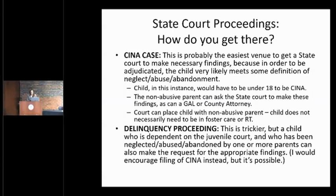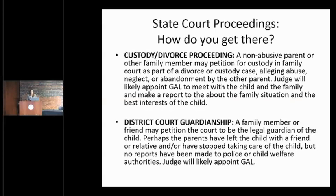You can also pursue this through a custody or divorce proceeding. A non-abusive parent or family member could petition for custody in family court as part of a divorce or custody case and allege abuse, neglect, or abandonment by the other parent. It would be wise to get the court to appoint an independent guardian ad litem. Similarly, with district court guardianship, a family member or friend could petition the court to be the legal guardian of a child — perhaps the parents are undocumented, have been deported, or left the child with a friend. The petitioning friend does not necessarily need to be a United States citizen.